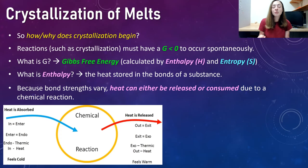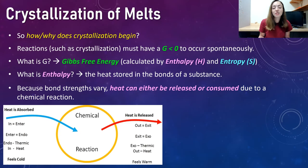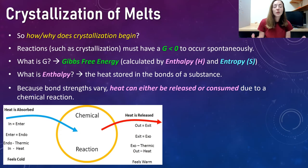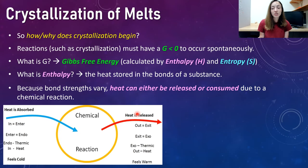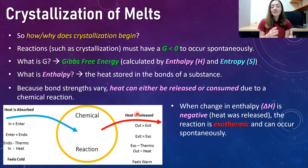Because bond strengths vary, heat can either be released or consumed due to a chemical reaction. The general rule is that the more bonds breaking during a reaction, the more energy needed, because it takes energy to break bonds. However, if a reaction causes more bonds to build than break, it will likely release more heat because it releases heat when you build bonds. We can see this in the bottom left figure: heat absorbed is an endothermic reaction, and heat released is an exothermic reaction — aka when the change in enthalpy is negative.